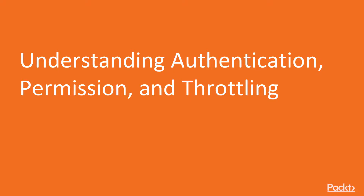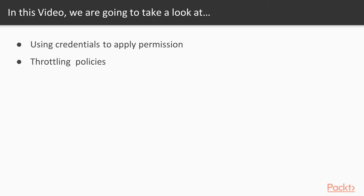Now we move on to the first video of this section that deals with understanding authentication, permissions, and throttling. In this video, we are going to use the credentials to apply the permission and throttling policies that will determine whether the request must be permitted or not.